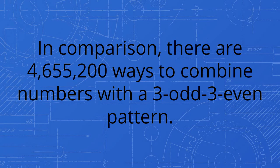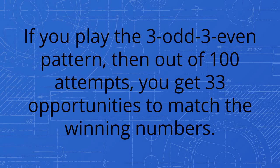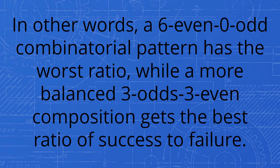In comparison, there are 4,655,200 ways to combine numbers with a 3-odd-3-even pattern. If you play the 3-odd-3-even pattern, then out of 100 attempts, you get 33 opportunities to match the winning numbers. In other words, a 6-even-0-odd combinatorial pattern has the worst ratio, while a more balanced 3-odd-3-even composition gets the best ratio of success to failure.